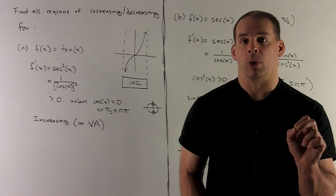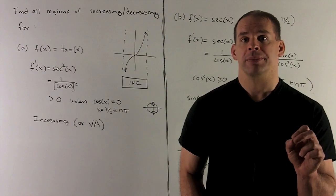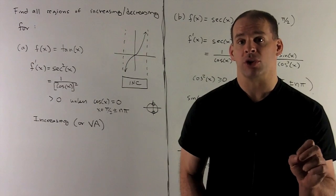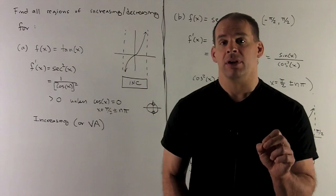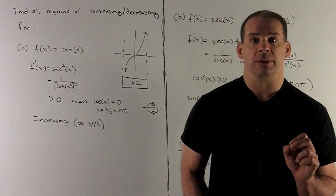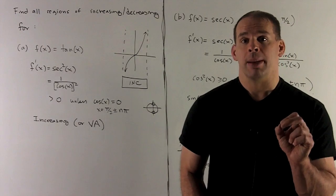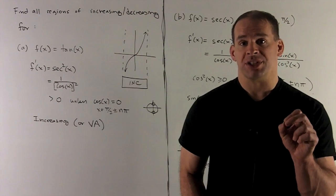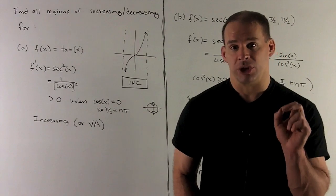In each region, we check exactly one point against the derivative. If we get a positive number, the region's increasing. If it's negative, then we're going to be decreasing in the region. Important point, make sure you're checking your points against the derivative, not the original function.